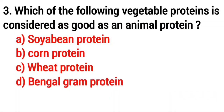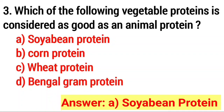Question number three: which of the following vegetable proteins is considered as good as an animal protein? Answer option A, soybean protein.